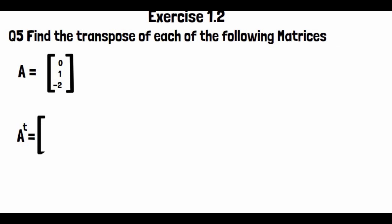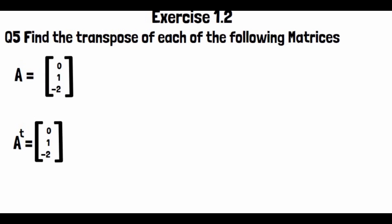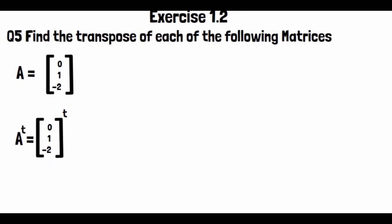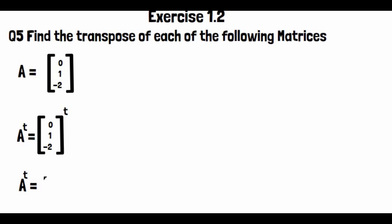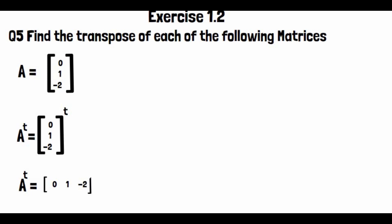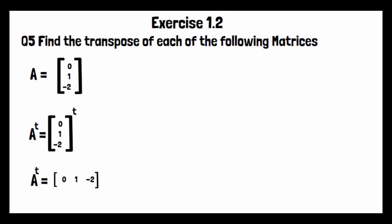We write A transpose (denoted by a small superscript t). Since A is a row matrix with entries [0, 1, -2], the transpose converts it to a column matrix: A^T equals [0; 1; -2].